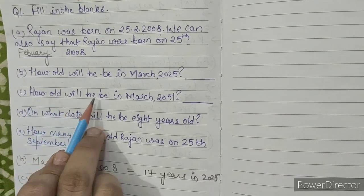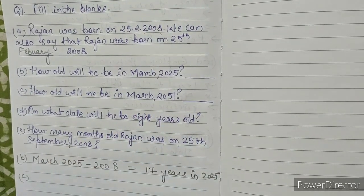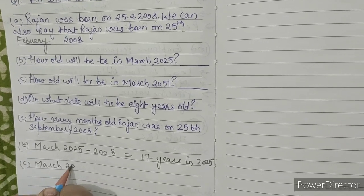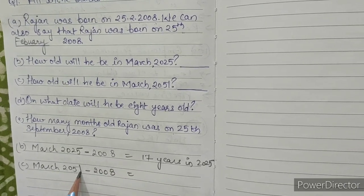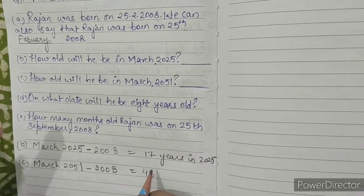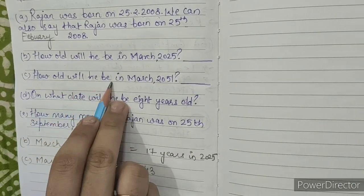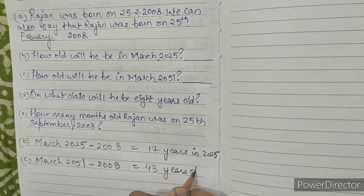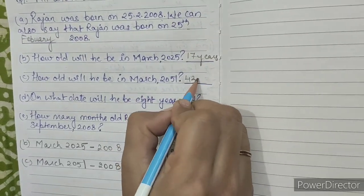How old will he be in March 2051? March 2051 minus 2008 equals 43. He will be 43 years old. So our answers are 17 years and 43 years.